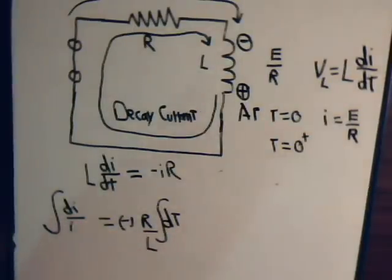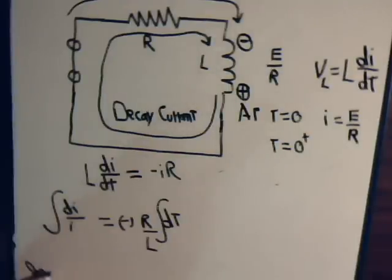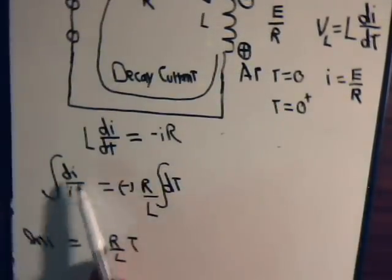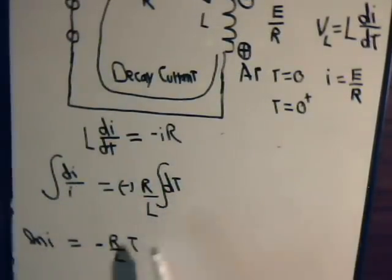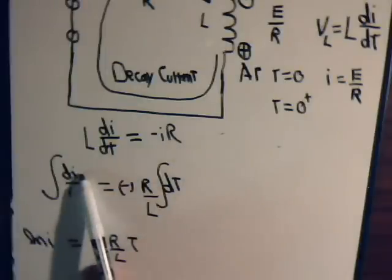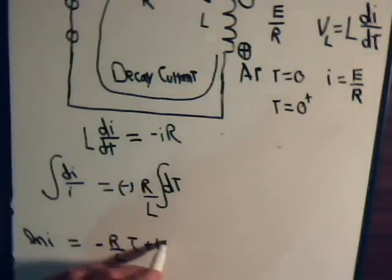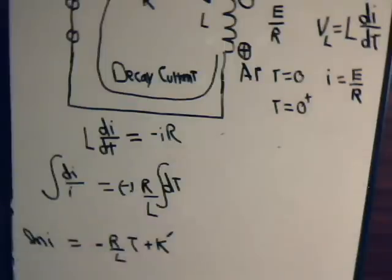This will give us the natural log of I equals minus R over L times t. That's a real simple integral too. This is the natural log of I, and that's just going to be t. In each case, we're going to have an arbitrary constant of integration from here and here. But we can lump these together in just a single arbitrary constant. We'll call that k prime.